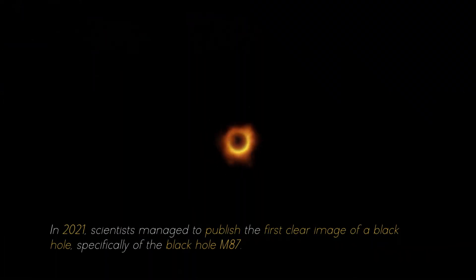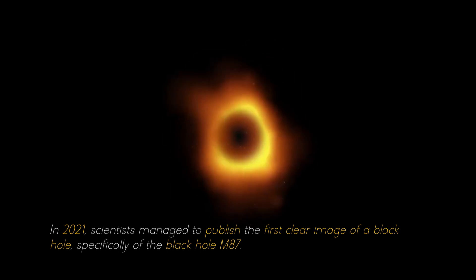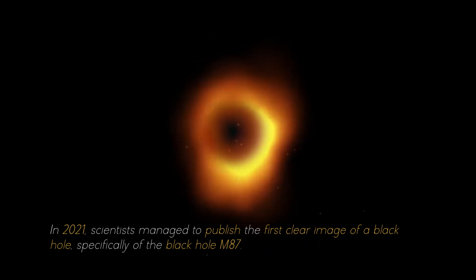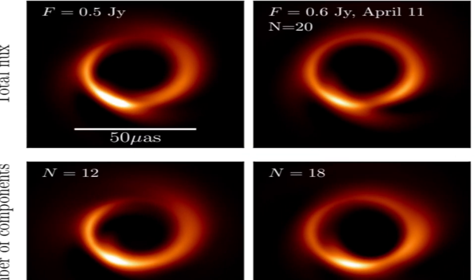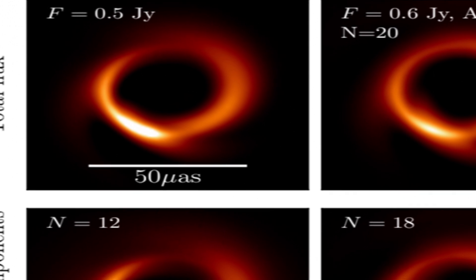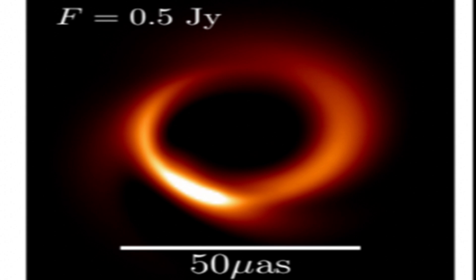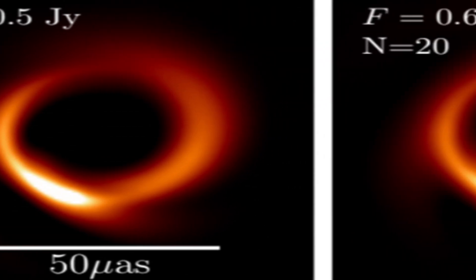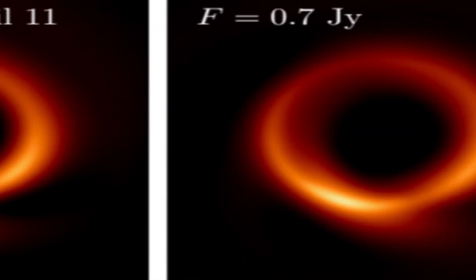In 2021, scientists managed to publish the first clear image of a black hole, specifically of the black hole M87. For several consecutive nights, photographs of the black hole were taken, and with each image researchers collected more evidence about it. It was necessary to combine the individual photographs to obtain a complete image that filled in all the gaps.